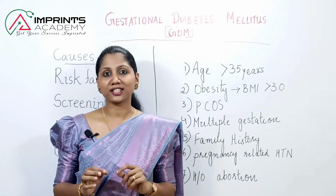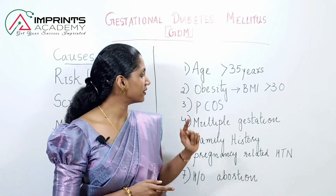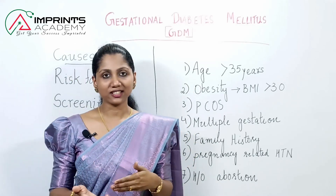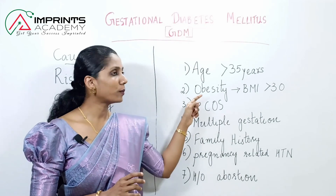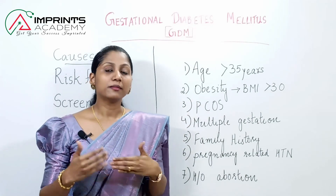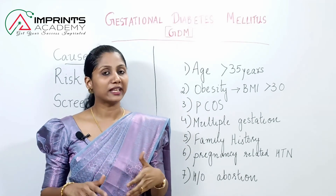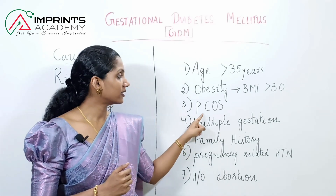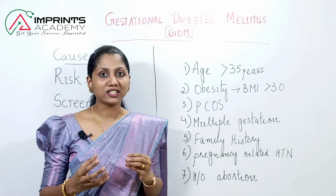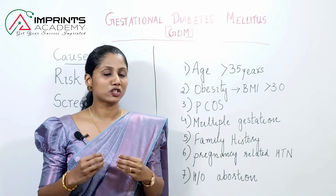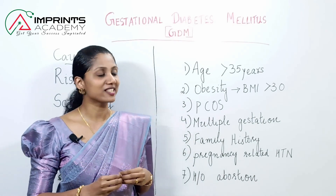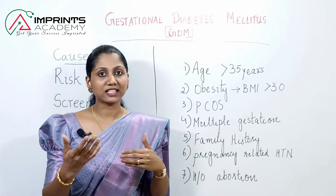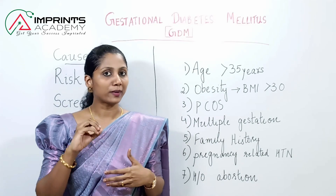What are the risk factors for GDM? The first risk factor is age above 35 years. The second is obesity. The third is PCOS — Polycystic Ovarian Syndrome, where the ovaries have multiple cysts. The fourth is multiple gestations — twins or triplets — which increases the risk of GDM.